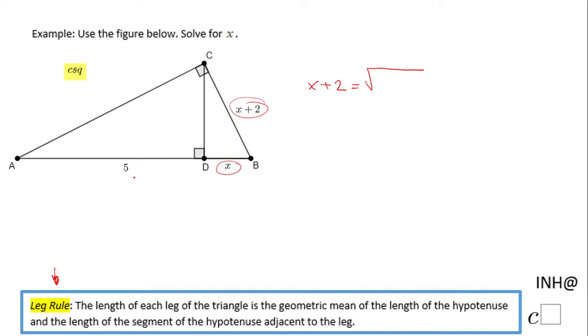In our case, the length of the hypotenuse will be this whole segment, which is going to be x plus five, and the length of the segment of the hypotenuse adjacent to the leg, which is this x. So basically now we have an equation in x.